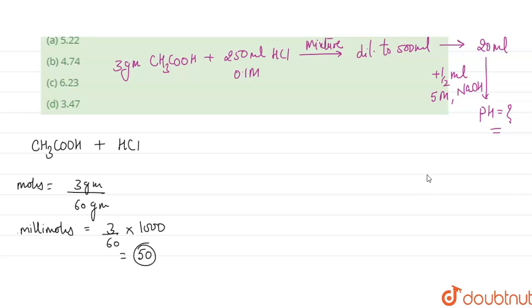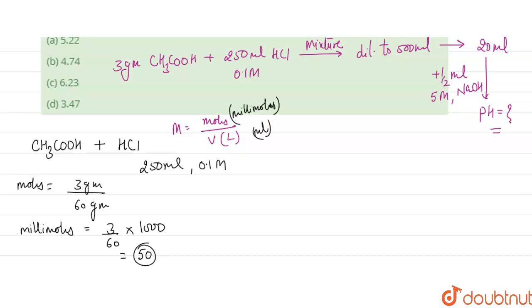Similarly for HCl, we have 250 ml of 0.1 M HCl. The formula of molarity is number of moles divided by volume in liters. Here we are taking moles in millimoles and volume in milliliters. So millimoles = molarity × volume in milliliters = 0.1 × 250 = 25 millimoles of HCl.